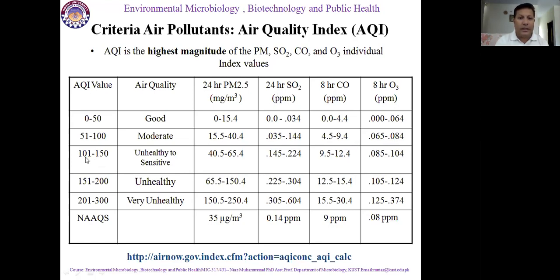When the AQI is 101 to 150, it is unhealthy for sensitive people. Particulate matter, sulfur dioxide, carbon monoxide, and ozone concentrations are in their respective ranges for this category. When the AQI is 151 to 200, it is completely unhealthy — that air is not good for human health. Particulate matter concentration will be 65 to 150 micrograms per meter cube, and sulfur dioxide, carbon monoxide, and ozone concentrations will be in their respective ranges.